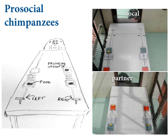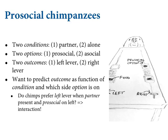To summarize that: two conditions — the partner condition, where another individual is at the other end, and the alone condition, where the other end of the table is empty. Two options — the prosocial and asocial option — which are counterbalanced left and right across trials. Each focal chimpanzee does a bunch of different trials on different days. And there are two outcomes you can observe.